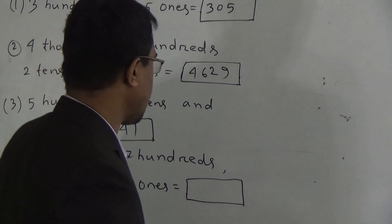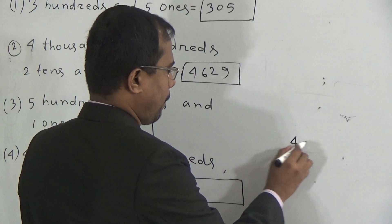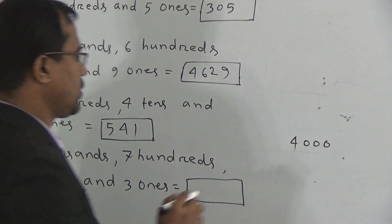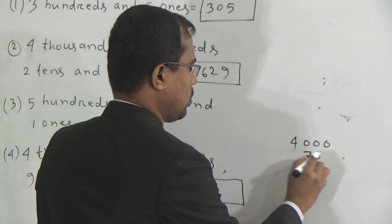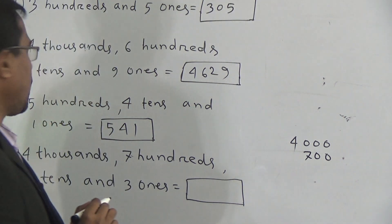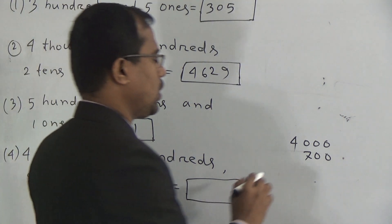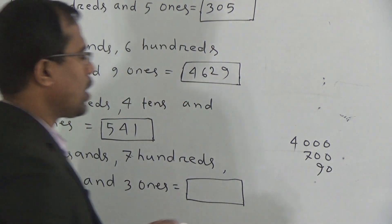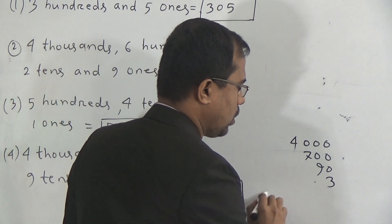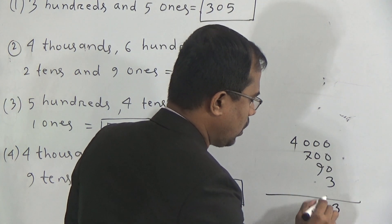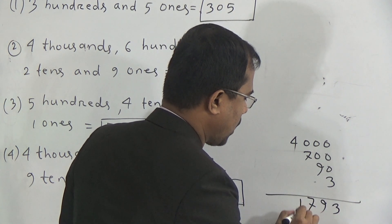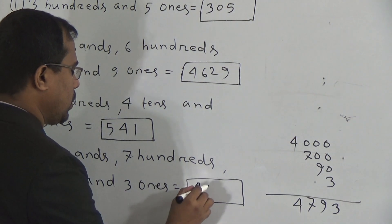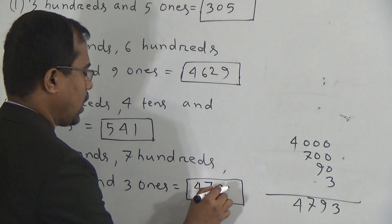Question 4: 4 thousands, 7 hundreds, 9 tens and 3 ones is equal to what? 4 thousands means 4000. Then 700. Then 9 tens means 9 × 10 = 90. And 3 ones means only 3. If we add them, ones column: 3, tens column: 9, hundreds column: 7, thousands column: 4. That means the answer will be 4793.